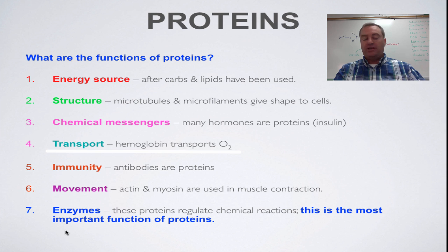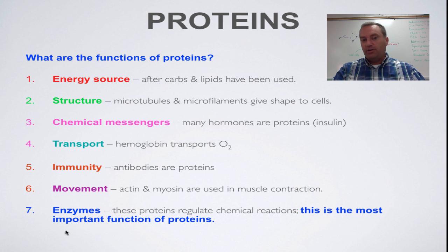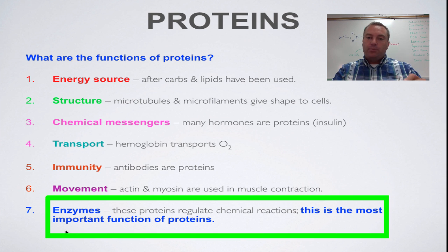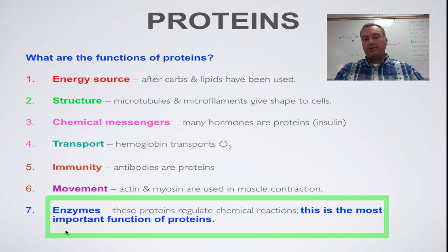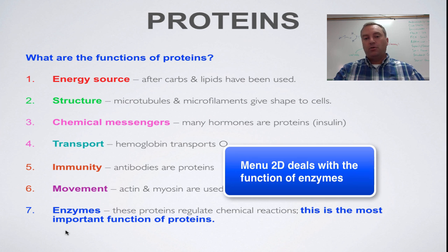Hemoglobin is a protein used for transport — it carries oxygen within your red blood cells. The I in time stands for immunity. A big part of your immune system is controlled by antibodies, which are Y-shaped proteins specific to particular pathogens. The M stands for movement — specifically actin and myosin, which are in your muscle cells and are used to contract. Finally, the most important function of proteins is enzymes. Enzymes control all of the chemical reactions, and we have an entire menu dedicated to enzymes coming up next in Menu 2D.